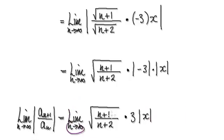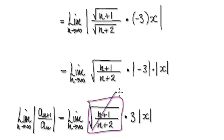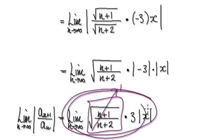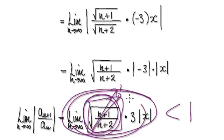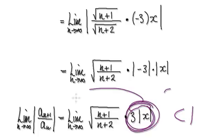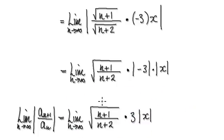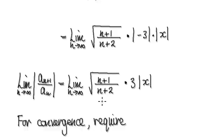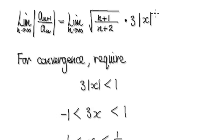The limit as n tends to infinity of this will be 1. So we want to concentrate on trying to make the remaining part less than 1. Since this limit is going to be 1, concentrate on making this other part less than 1. If you can make this less than 1, then the whole thing will be less than 1. So in order for convergence, we require this to be less than 1.